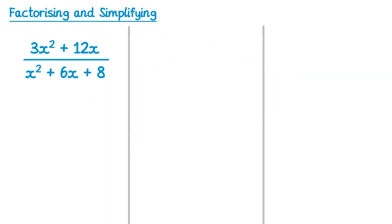Factorising can be extremely useful to simplify more complex expressions. Take this fraction here. If we factorise the top using a single bracket, we can factorise out 3x to give 3x(x + 4), and on the bottom as a quadratic we can factorise that into two brackets, (x + 4)(x + 2).